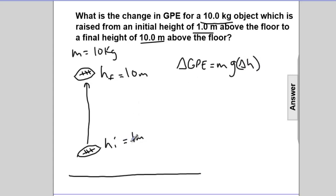Now we can eyeball this, it goes from 1 to 10, so that would be a positive 9. But another way of writing a change in height, I'll just rewrite the entire equation. Change in GPE is M times G times the change in height, that would be HF minus HI, the final height minus the initial.